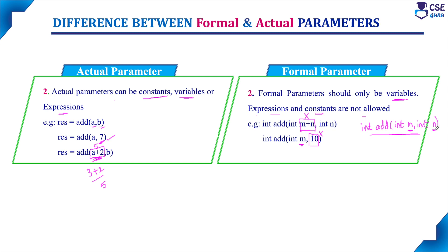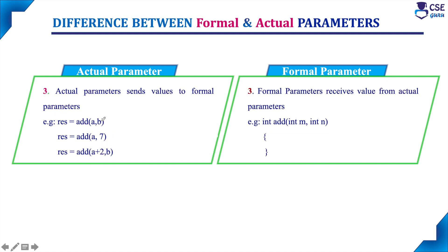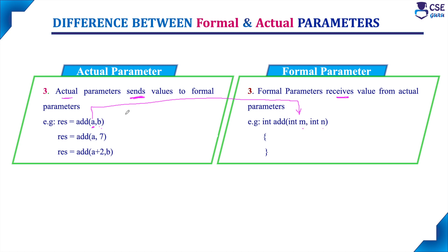This is very important. This is the second difference. For the third difference: the actual parameter will send the values to the formal parameter, and the formal parameter will only receive values from the actual parameter. The name of the actual parameter and the name of the formal parameter do not need to match — position is what matters. The first actual parameter value will be copied to the first formal parameter variable, and the second actual parameter value will be copied to the second formal parameter variable.